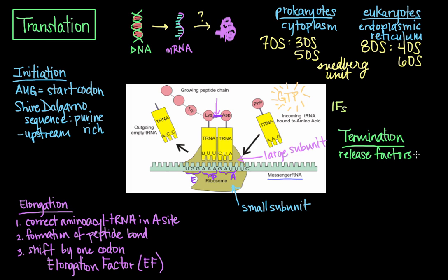Namely, release factor 1, which recognizes the UAA and the UAG stop codons, and then release factor 2, which recognizes the UAA and the UGA stop codons. These factors trigger the hydrolysis of the ester bond in the peptidyl tRNA and release the newly synthesized protein from the ribosome. A third release factor, RF3, catalyzes the release of release factor 1 and release factor 2 at the end of the termination process.